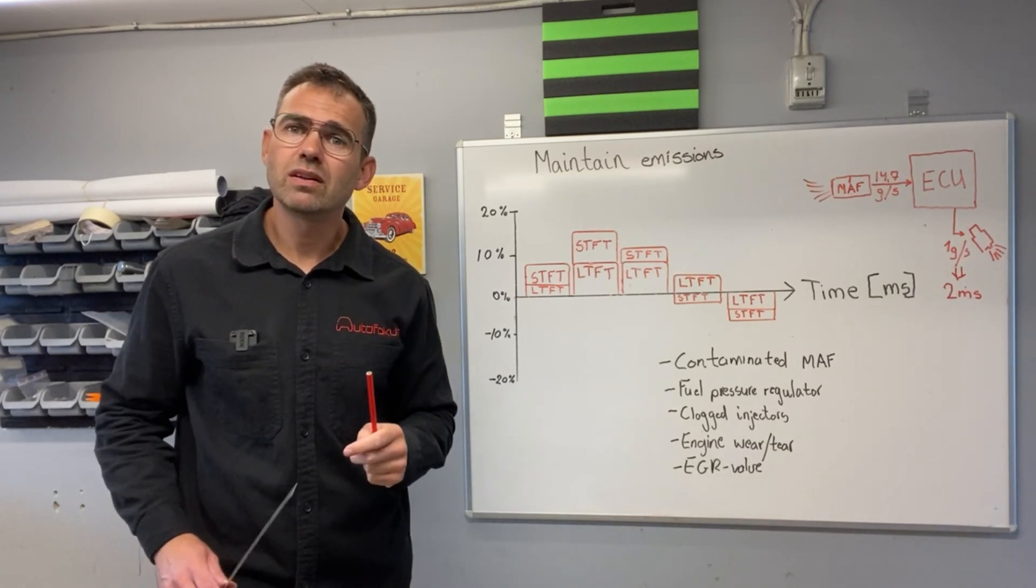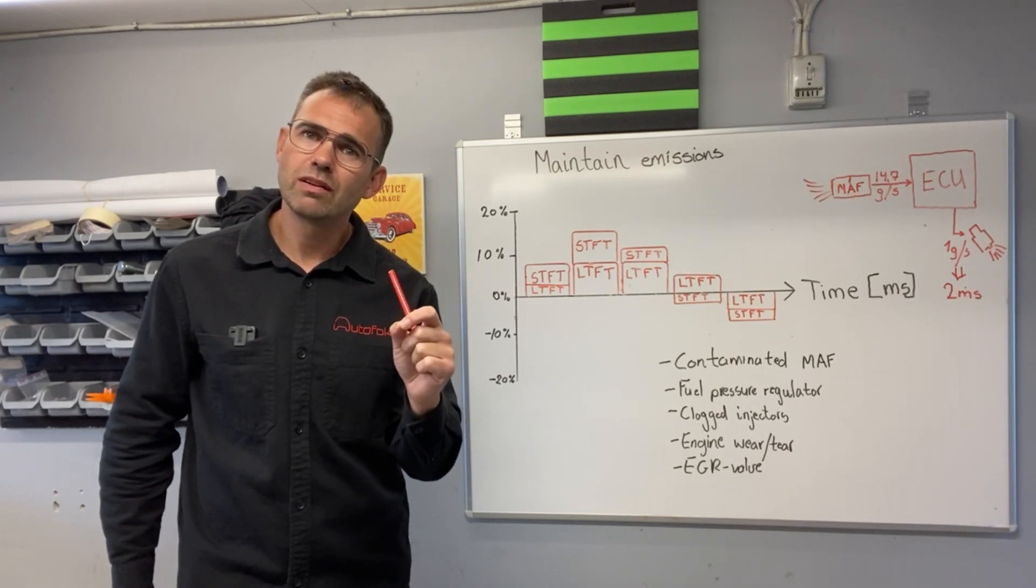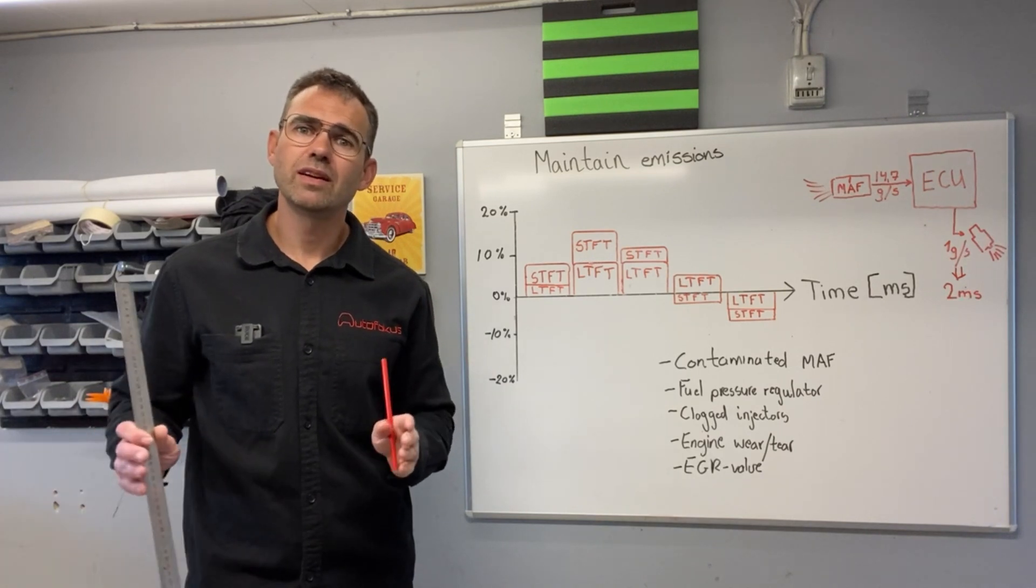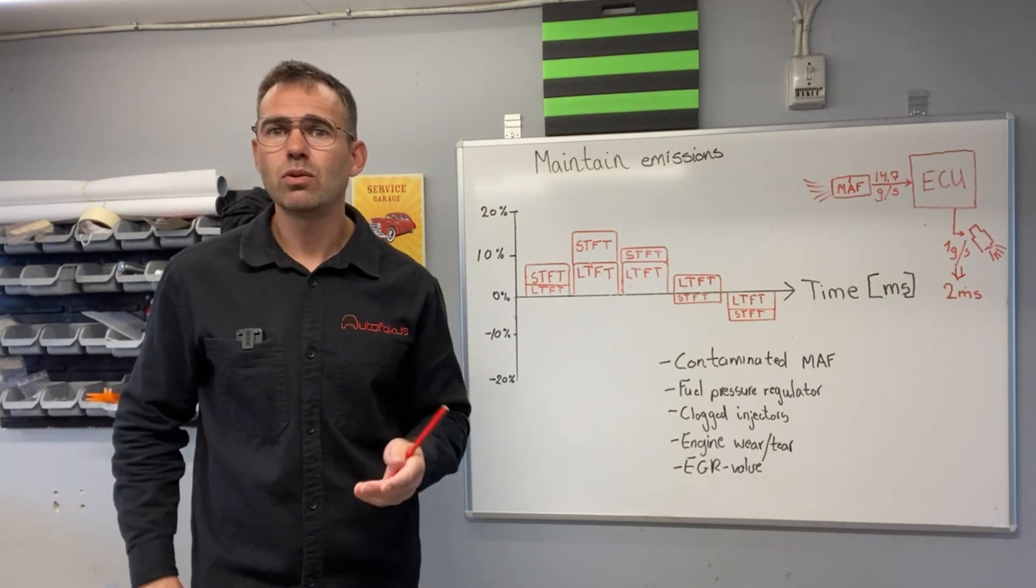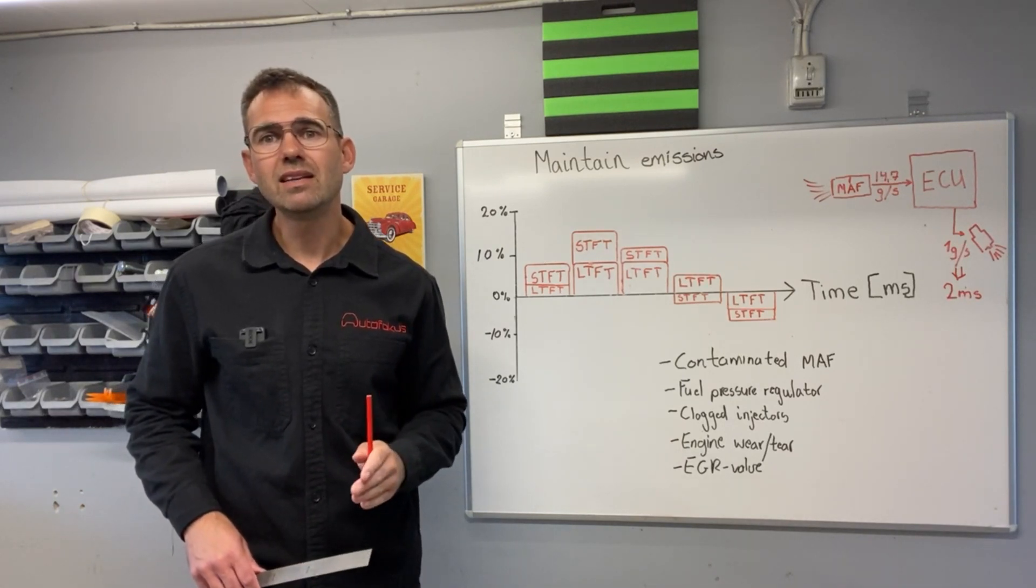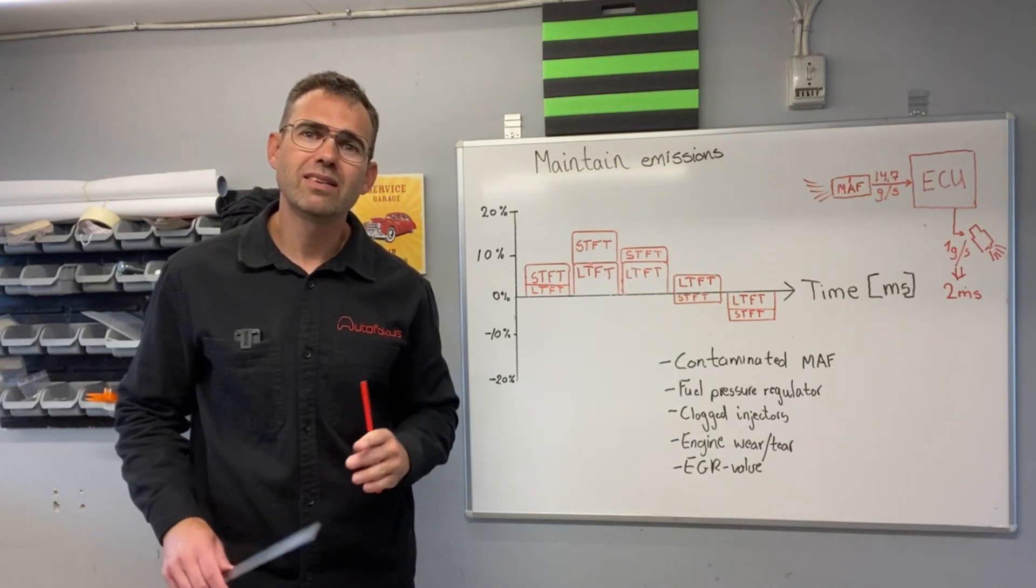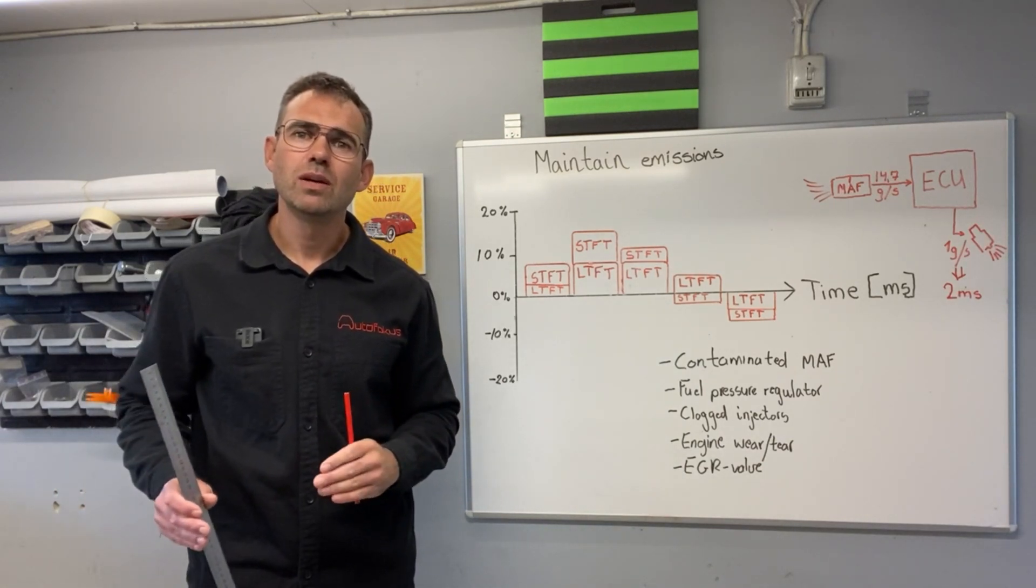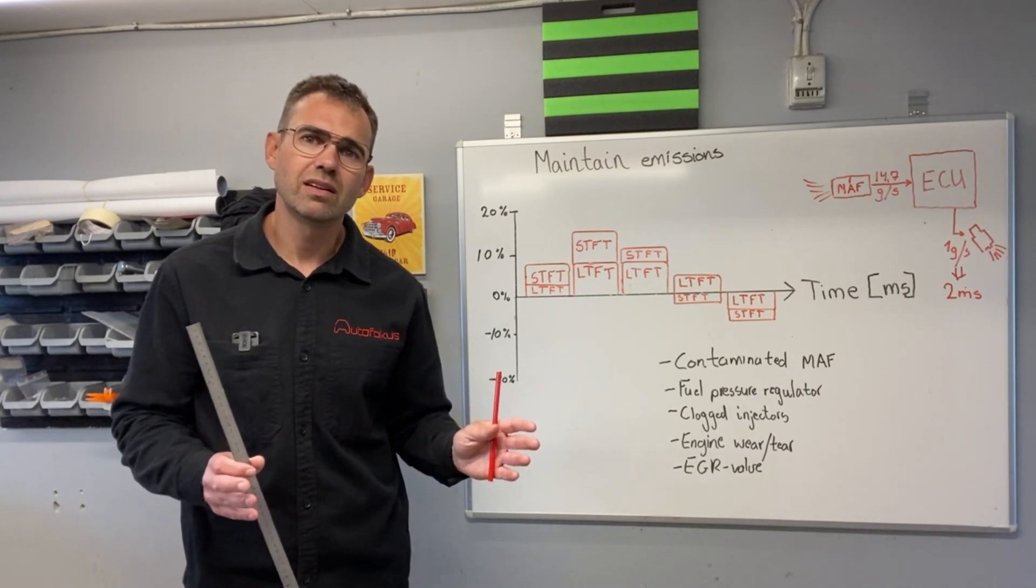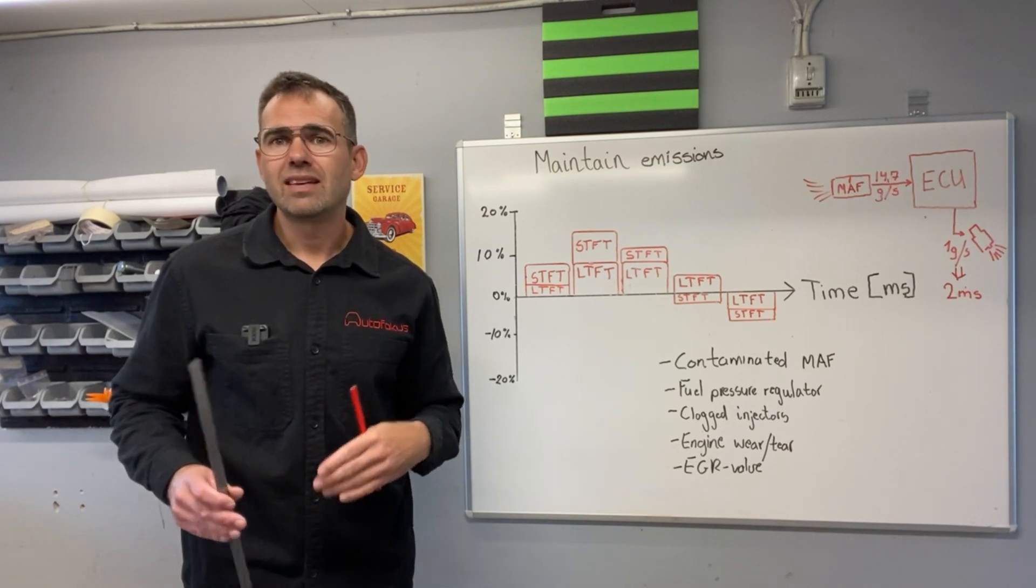Now remember, a catalytic converter is only effective around lambda 1. If you move 5 or 10% away, it doesn't really convert all the particles, CO and unburned gas. So the car needs to maintain its emissions in the whole lifetime. And that's why there is this need for a system which somehow can adjust to the changes of the engine over time. It's also what is known as adaptations.